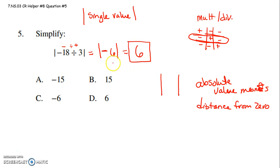And that's all that absolute value means. How far is negative 6 from 0? 6 units from 0. All right, I hope that helps.